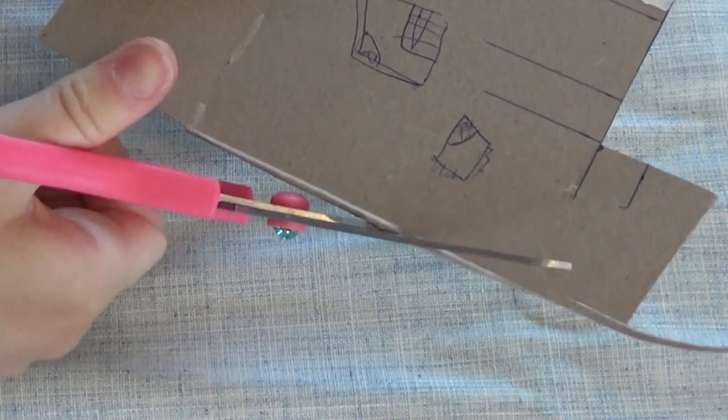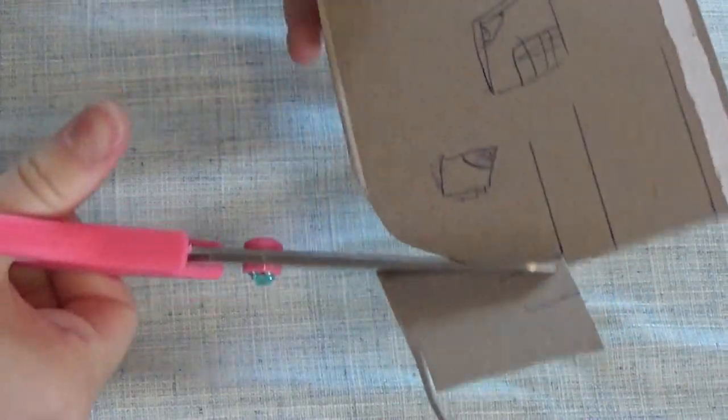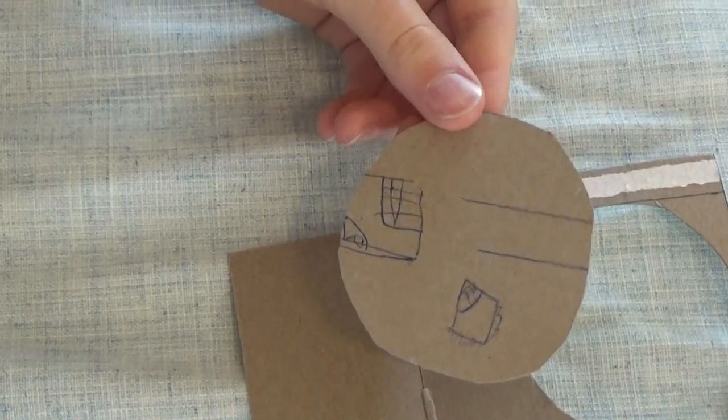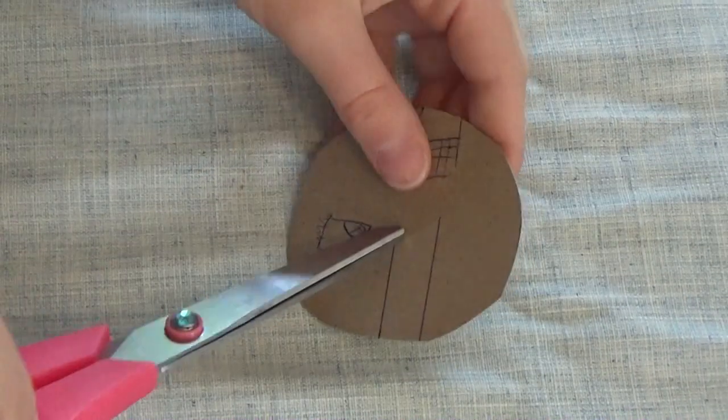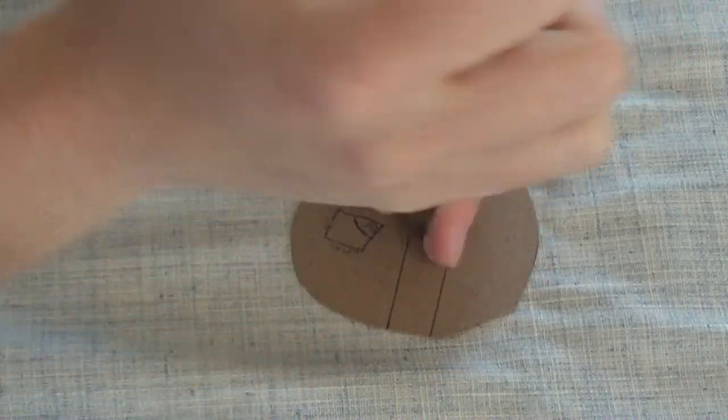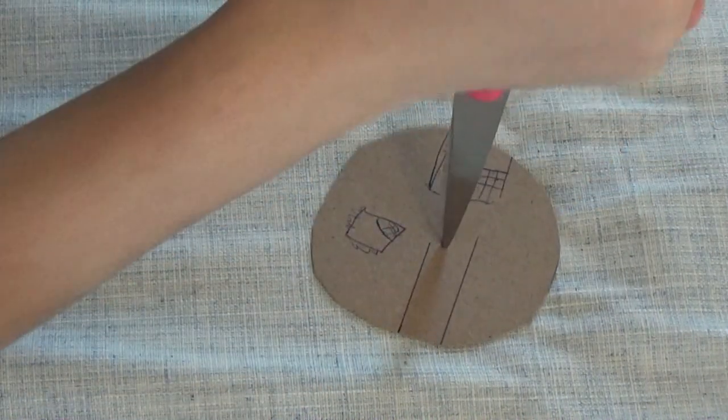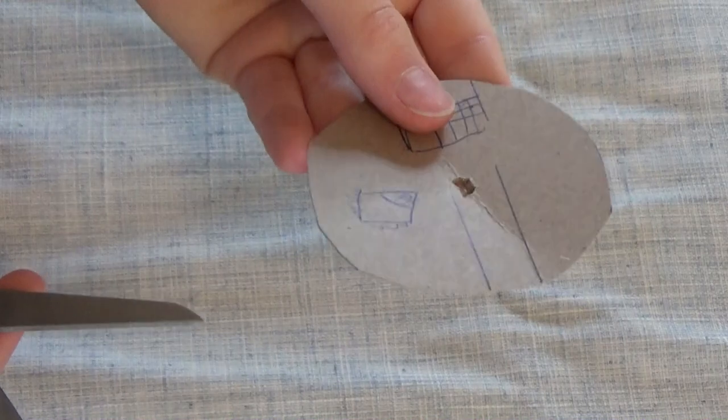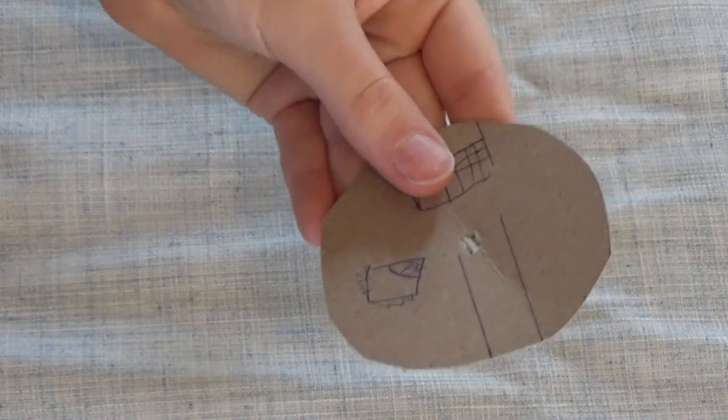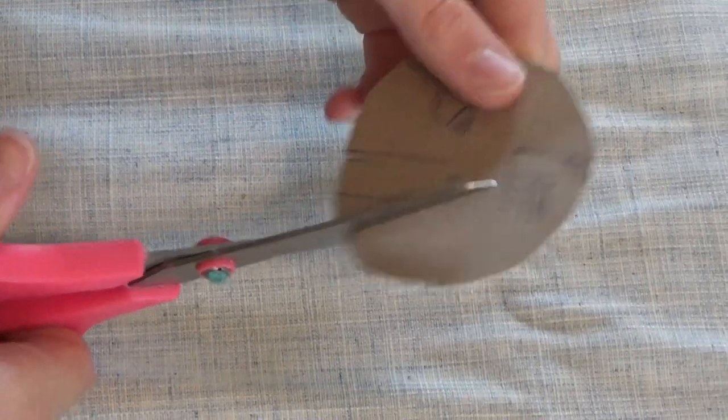So the first thing I'm going to do is roughly cut out a circle from my thin cardboard, just like this, and then you want to poke a hole in the center of it. After that's done, you're going to cut 8 notches around the outside of the circle.